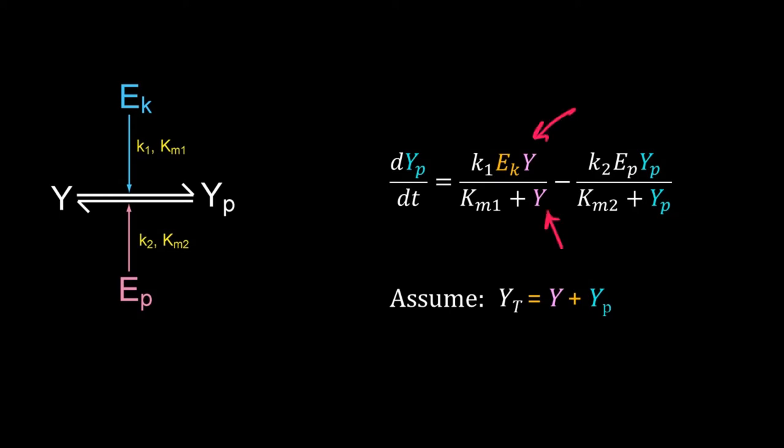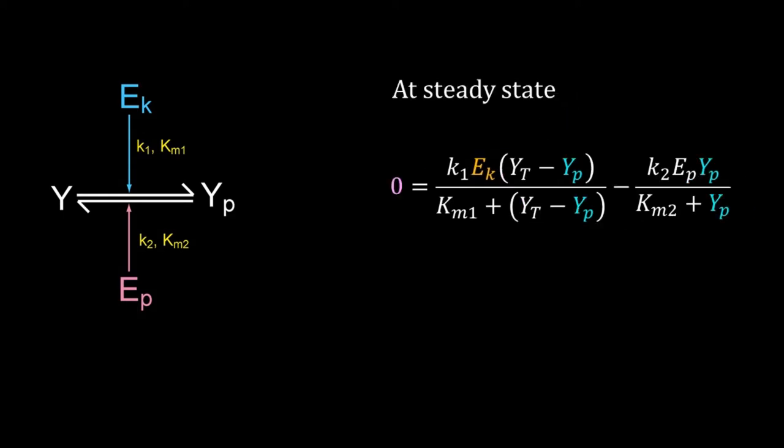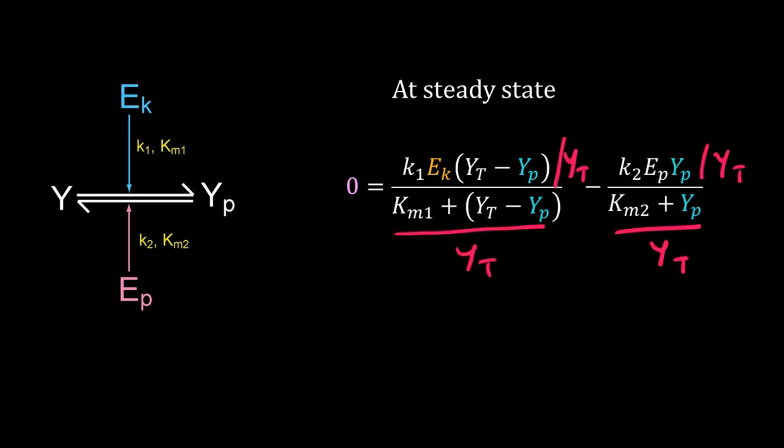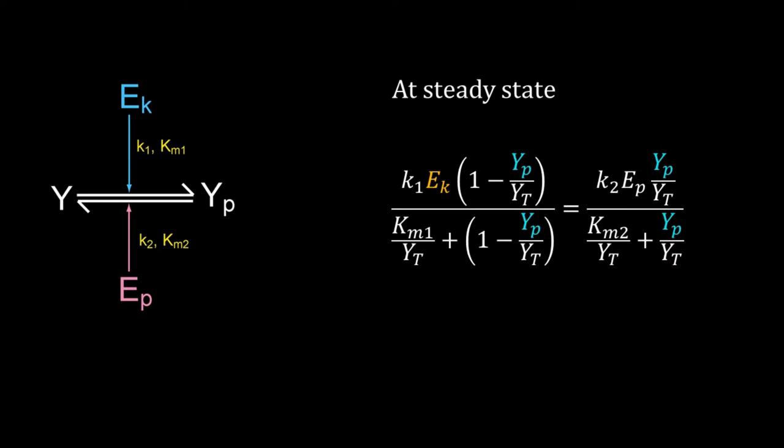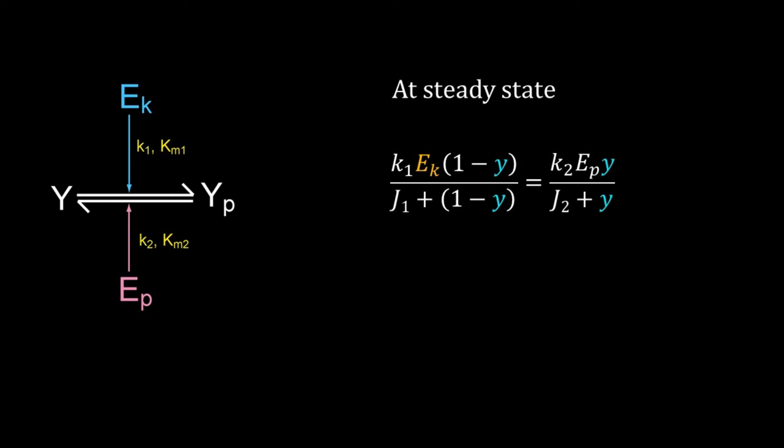So replace Y by Y_t minus Y_p. At steady state, dY_p/dt is zero. Let's do some algebra and rearrange the terms. Replace Y_p by Y_t by lowercase y. This smaller y represents fraction of Y phosphorylated. Replace K_m1 by Y_t by j1 and K_m2 by Y_t by j2. Then use v1 for k1 into E_k and v2 for k2 into E_p.